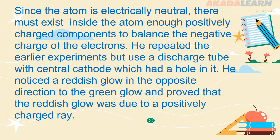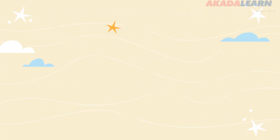Since the atom is electrically neutral, there must exist inside the atom enough positively charged components to balance the negative charged electrons. Mr. Thompson repeated the earlier experiments, but used a discharge tube with a central cathode, which had a hole in it. He noticed a reddish glow in the opposite direction to the green glow, and proved that the reddish glow was due to a positively charged ray.